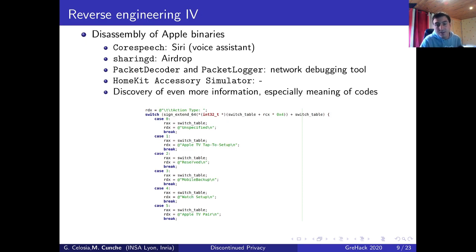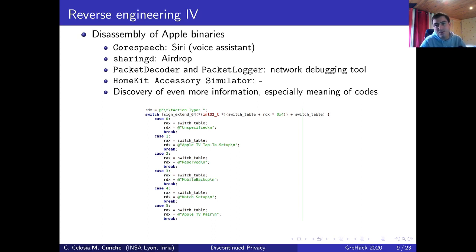Using HCI tool, we generated custom messages based on the templates of messages we had already observed and broadcasted those messages over the air, observing actions that were potentially triggered on nearby devices. Most importantly we had a look at how they were interpreted by PacketLogger. Finally we did some disassembly, selecting a number of binaries — technologies such as CoreSpeech used by the Siri voice assistant, SharingD involved in AirDrop functionalities, also PacketDecoder and PacketLogger, and other software like HomeKit Accessory Simulator. We managed to get the format of those messages but most importantly the meaning of the codes. For instance, the code I'm presenting is related to parsing one message called 'action' that can have many types — value three is for mobile backup, four for watch setup, and five for Apple TV pair.